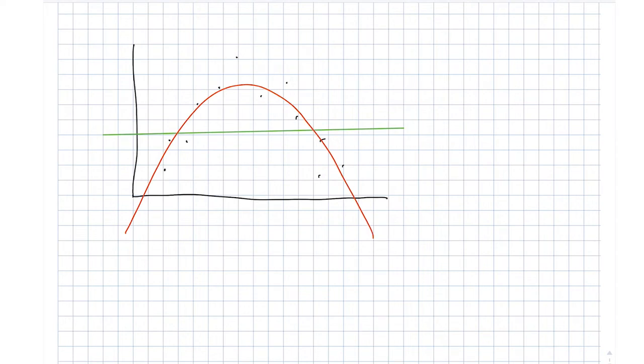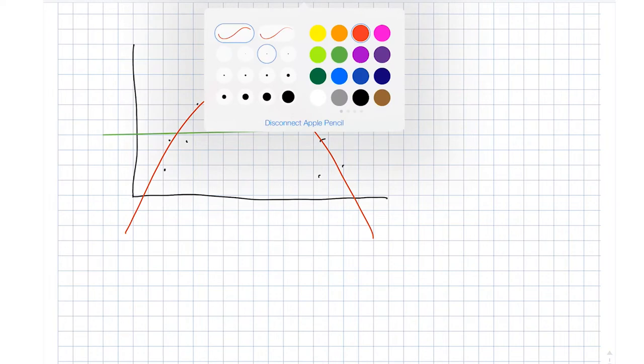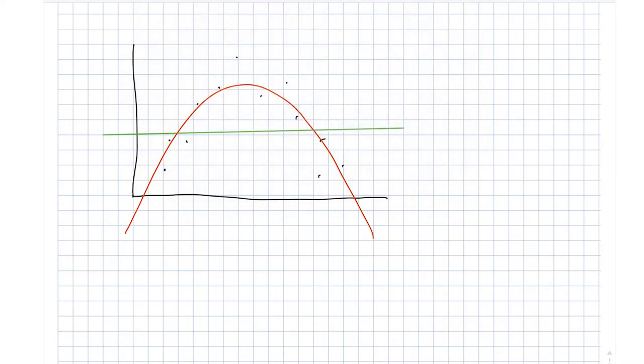But we could, of course, move on to higher and higher order of polynomials here. And if we went a little bit crazy with that, we might end up with a polynomial that looks something like this. So in that particular case, we have 1, 2, 3, 4, 5, 6, 7, 8, 9 lumps there, so to speak.